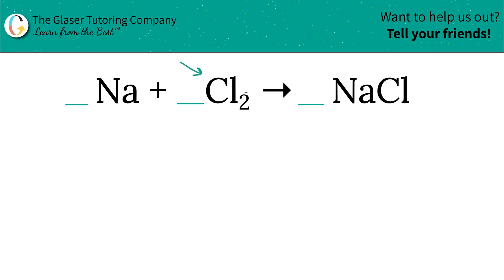Next element is going to be chlorine. Now subscript of chlorine here is going to be a two and the subscript of chlorine on this side is going to be a one. So that is not balanced. You have two chlorines on the left, only one chlorine on the right. So I want to place a coefficient on the lower side.